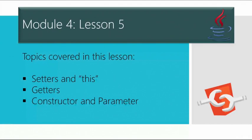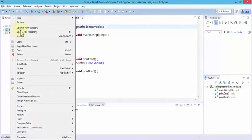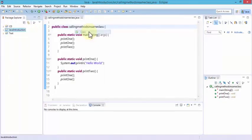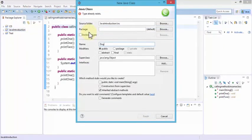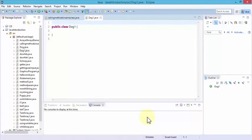Java objects are a lot like objects in real life, so let's create a real life object from scratch — let's create a dog. I'll open up the Java Eclipse editor, right-click on the Java Introduction folder, choose New, then Class, give it the name dog one, and click Finish. This creates a public class called dog one.